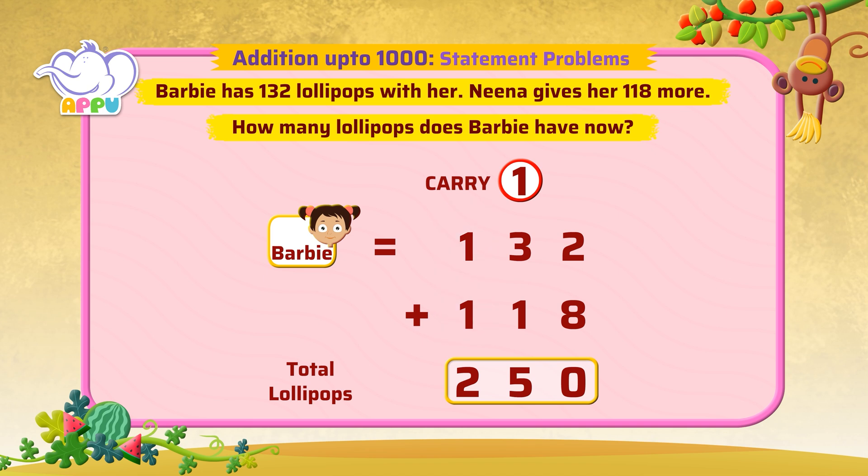So, 132 plus 118 is equal to 250. Barbie has 250 lollipops in all. I knew you could do it!